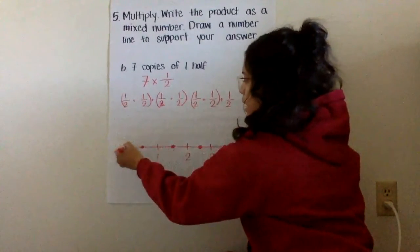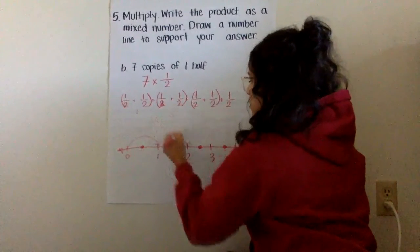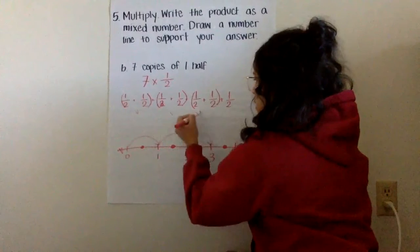So one half and one half. I can make one jump here. One half and one half again. That's another jump. One half and one half again. That's three, right?